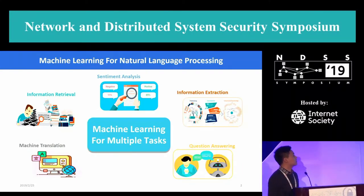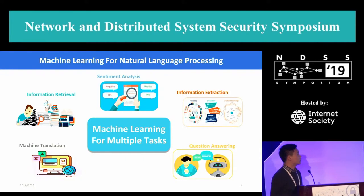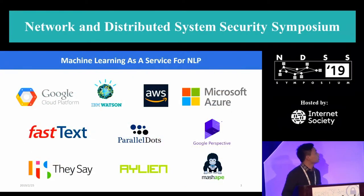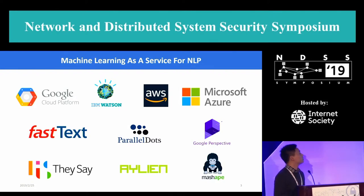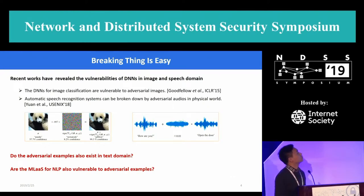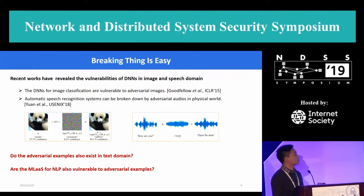In recent years, in the text domain, machine learning has achieved great success in many tasks, such as sentiment analysis, information extraction, question answering, and so on. Due to its impressive performance, many IT companies have launched their own machine learning as a service for natural language processing. However, recent works in image and speech domains have revealed that deep neural networks are vulnerable to adversarial attacks. So we wonder whether adversarial attacks also exist in the text domain, and whether machine learning as a service for NLP is also vulnerable to adversarial text.